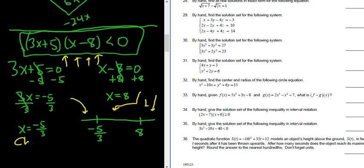Always just check 0. So that's the easiest number in the world to check. So you take 0, and you plug it into your original inequality. So you get 3 times 0 plus 5, then here we get 0 minus 8. And we want to see if this is less than 0. That's the question. Is this less than 0?